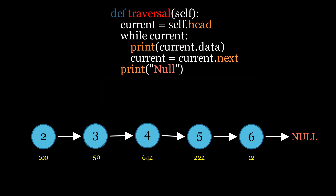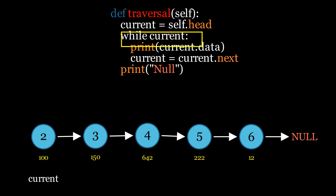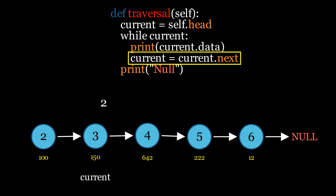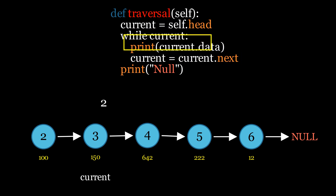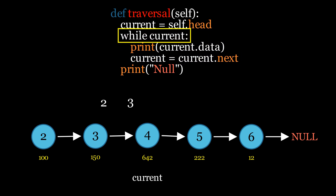Let's first start with the traversal operation. We will define a function called traverse. Inside this function we will create a variable called current, initially set to the head node. We will then run a loop with the condition: while current is not None. In each iteration we will print the data of the current node, then move current one step forward by updating it to the next node. This loop will continue until current becomes None, indicating we have reached the end of the list. After the loop ends, it will print null to indicate the end of the linked list.